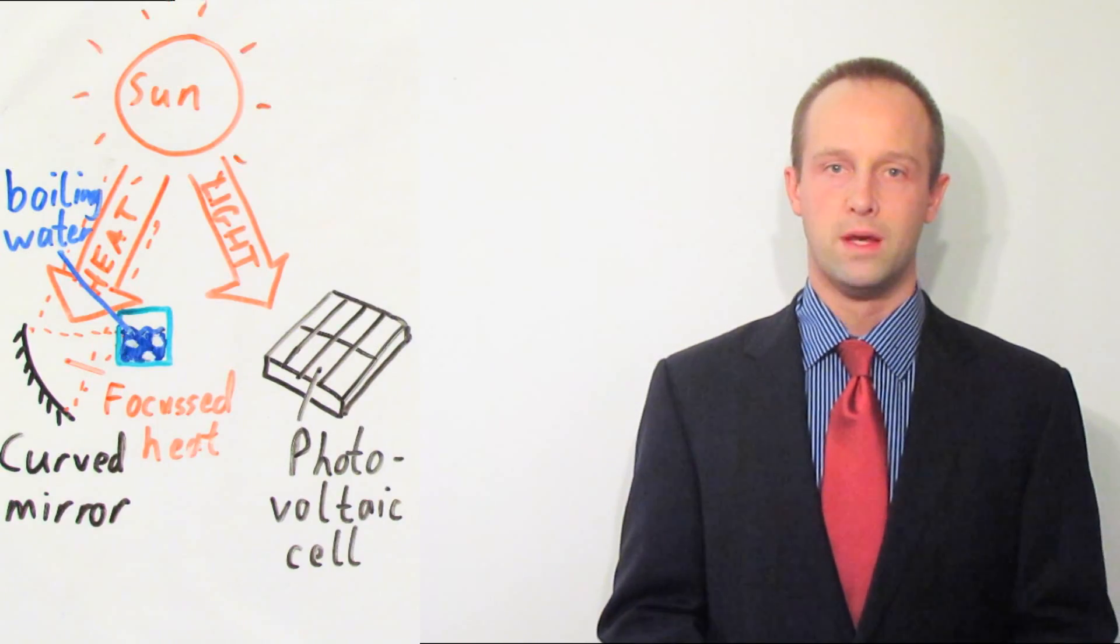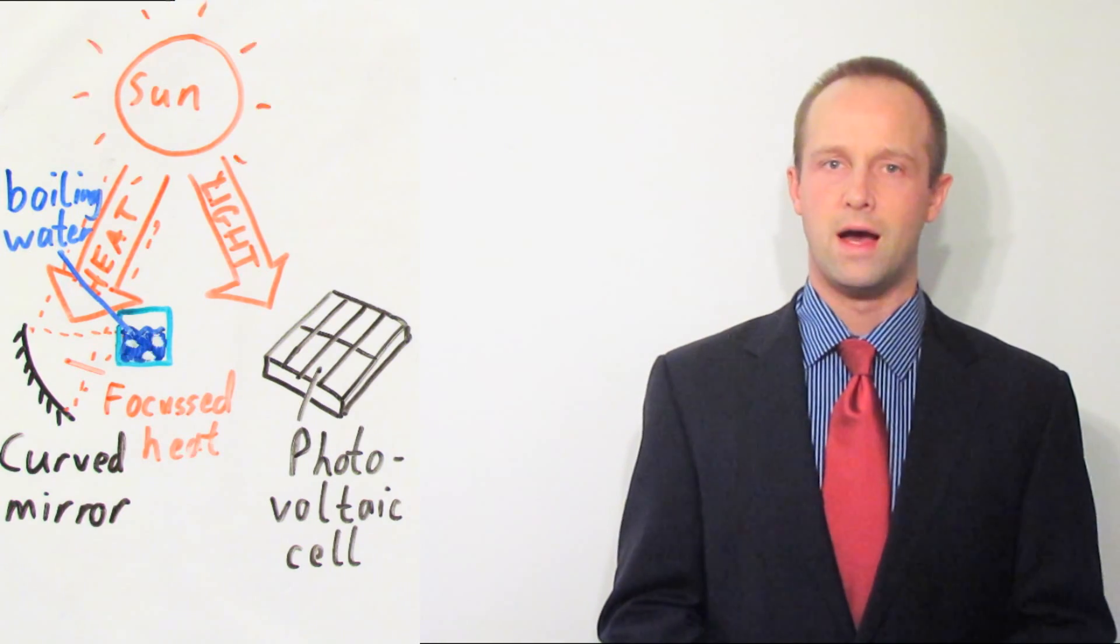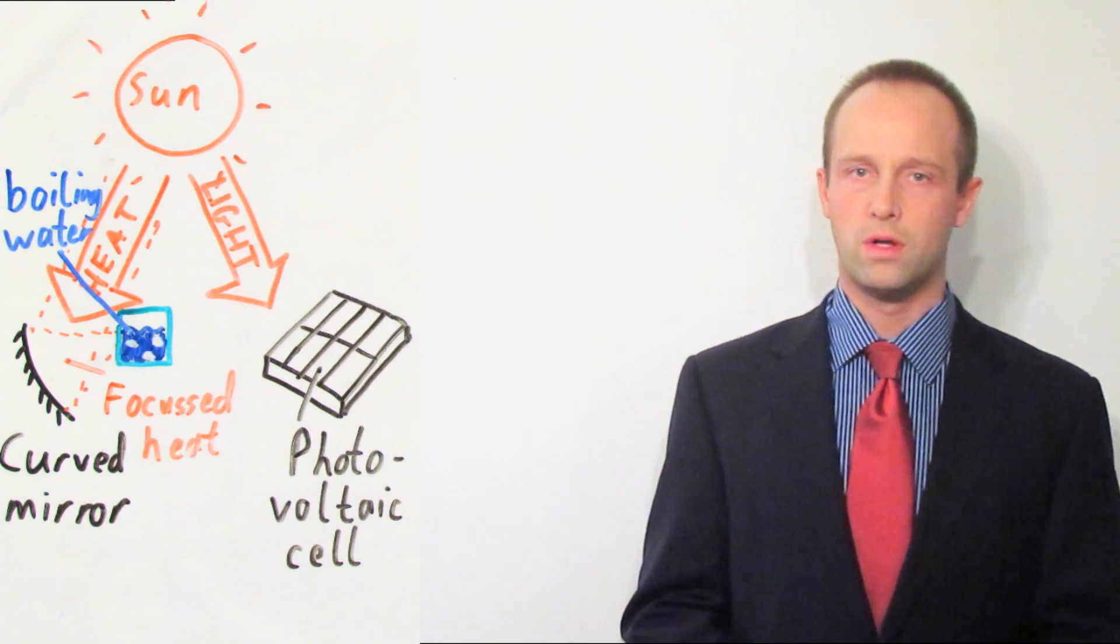There's also solar power. We can use the heat from the Sun to heat water, or alternatively we can actually use the light from the Sun. We use a photovoltaic cell like the one in this calculator, or you may have seen them on people's homes as well. This photovoltaic cell turns light directly into electricity.